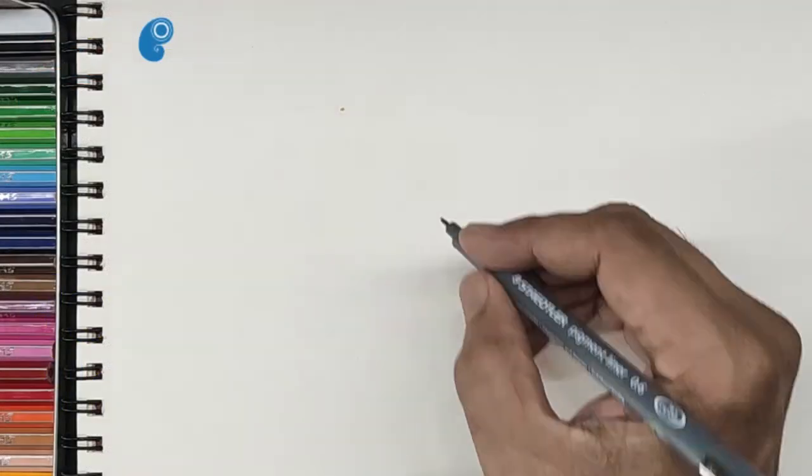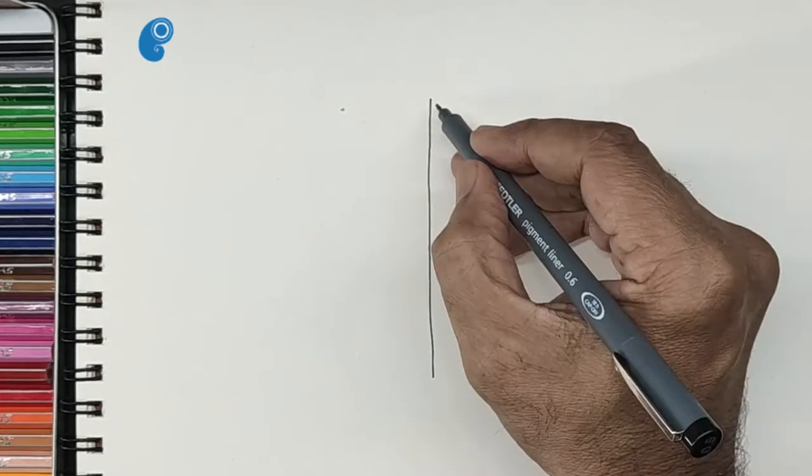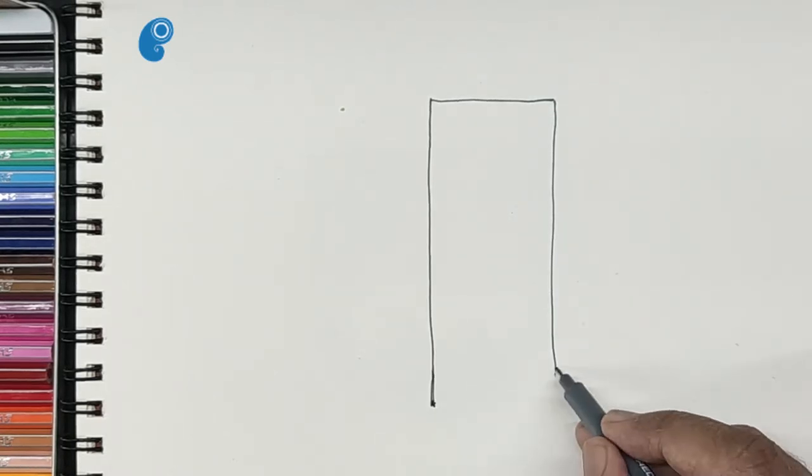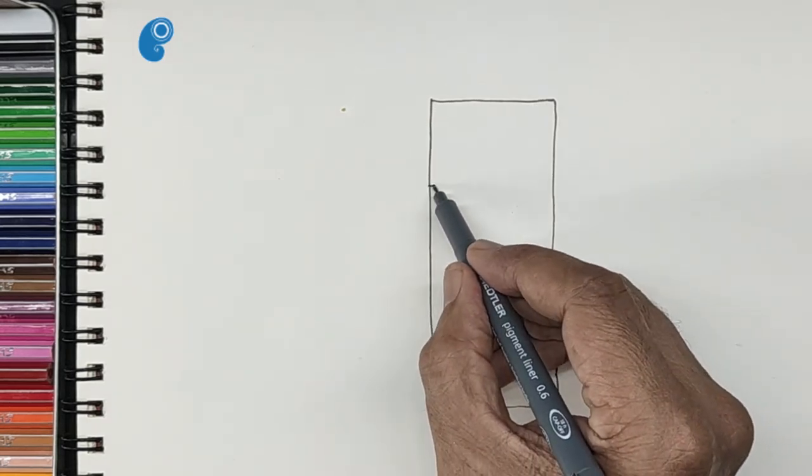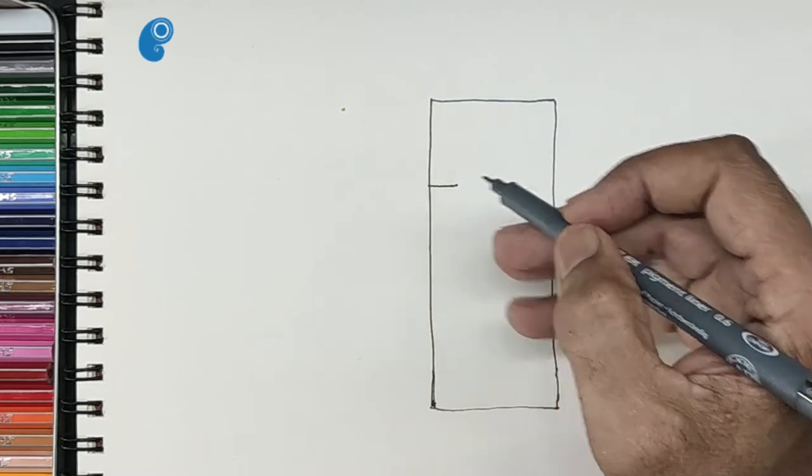Let us first draw a vertical rectangle. Let us cut it here. This will form the ear on either side.